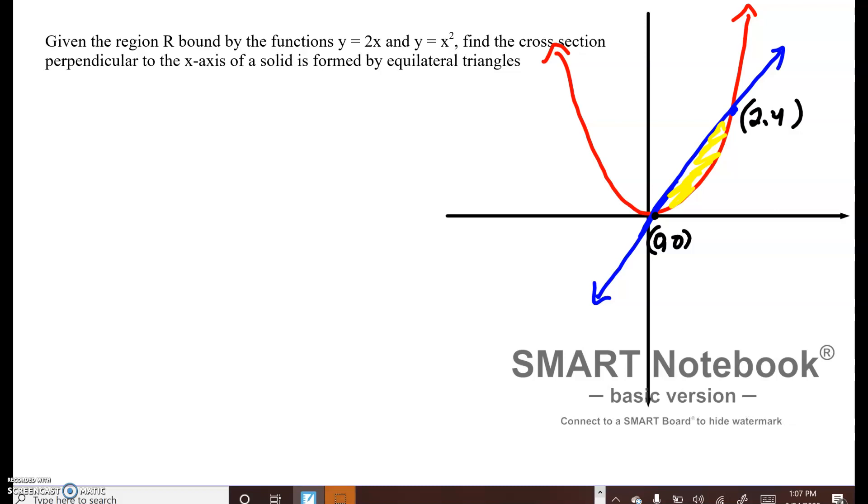We're going to do a cross-section. We're going to find the volume of a solid whose cross-sections are equilateral triangles. The base of this cross-section lies in this yellow region, and it has to be perpendicular to the x-axis. That means everything has to be with respect to x.